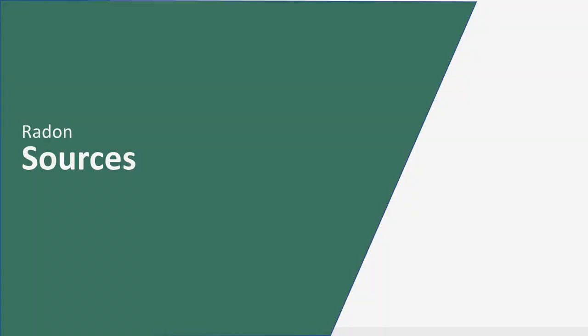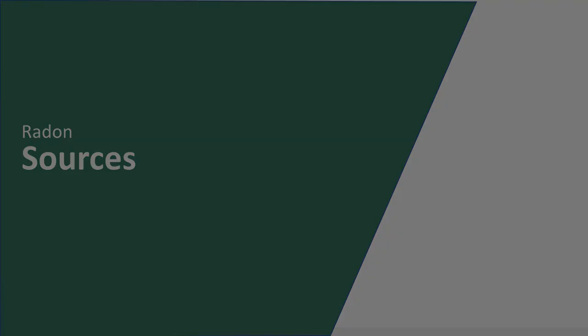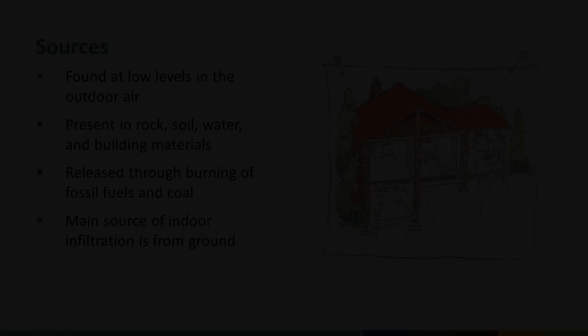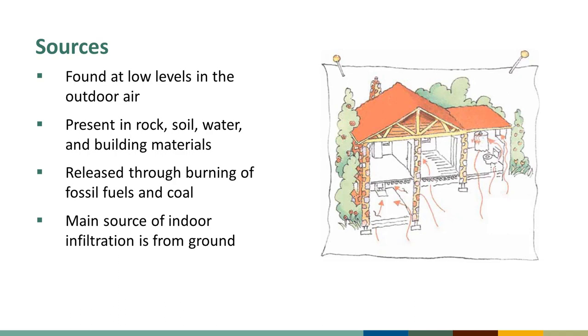Uranium and thorium are ubiquitous in the Earth's crust, and rock and soil will continually release radon into the environment. Radon gas in rocks and soil can move to air, groundwater, and surface water. Radon is also present in building materials, and the burning of coal and other fossil fuels releases radon as well.